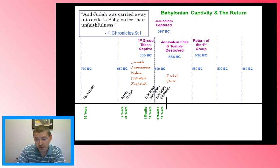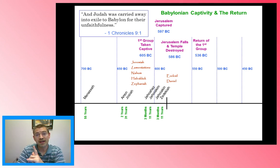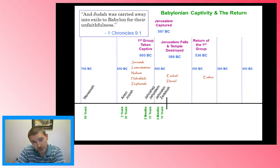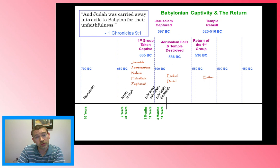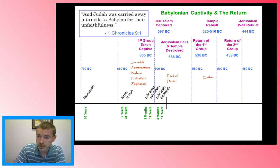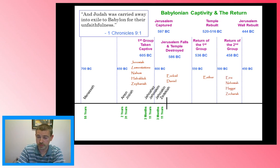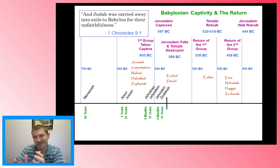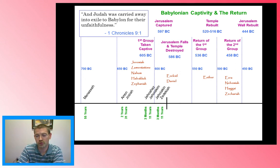The return began in 536 BC with the first group, when King Cyrus the Persian gave the command for them to start going back. The story of Esther happens between the return of the first group and the time of the rebuilding of the temple. Then there's a return of a second group. Finally, in 444 BC or so, the Jerusalem wall is rebuilt. Ezra and Nehemiah are the two great men whose books give us the history of this time period — the return and the rebuilding of the temple and Jerusalem's walls.